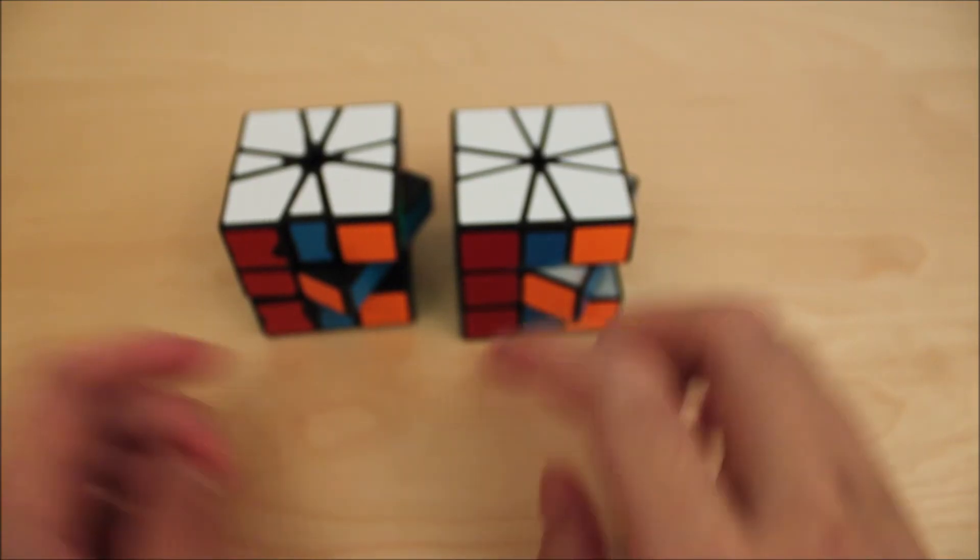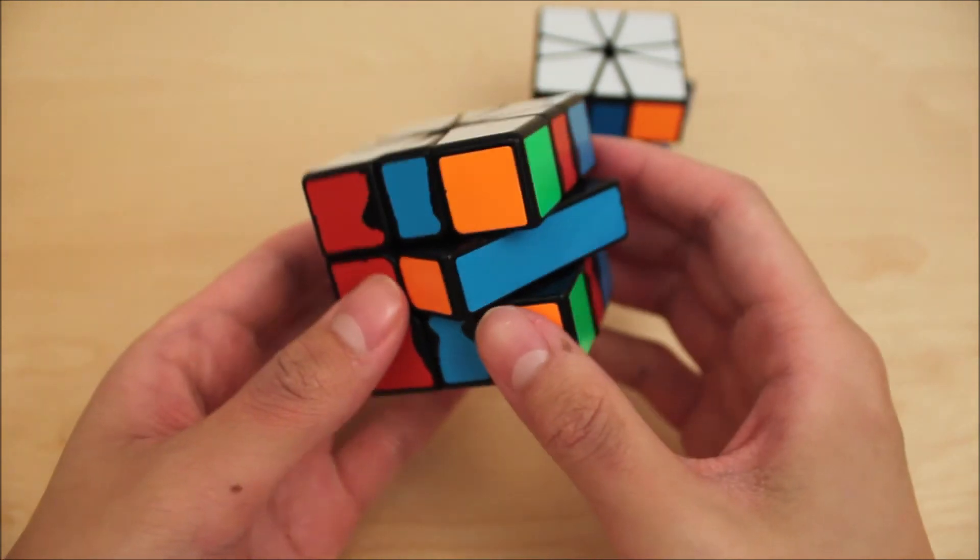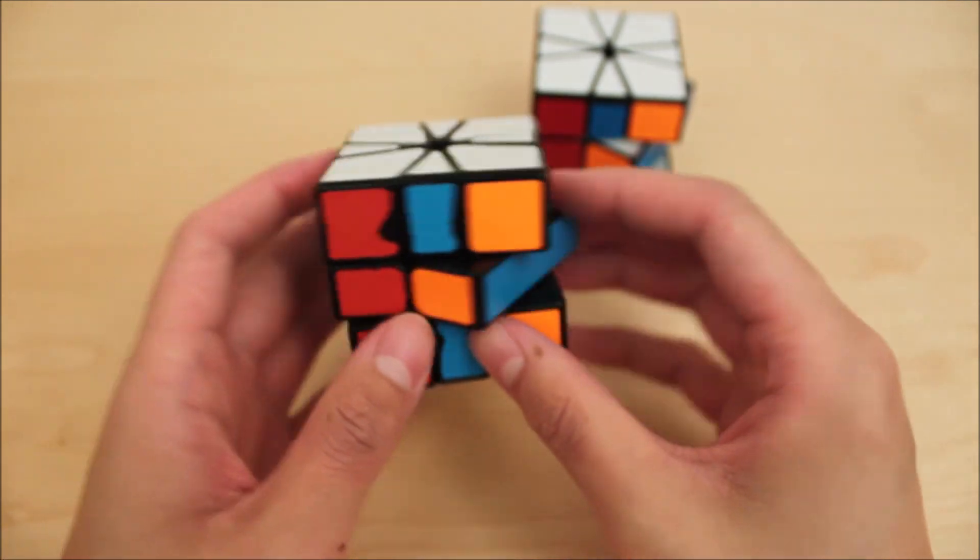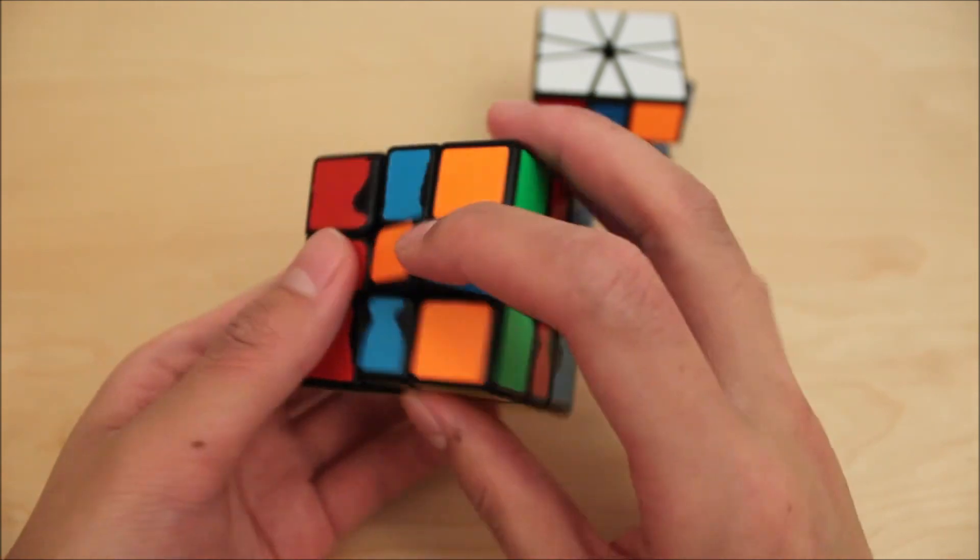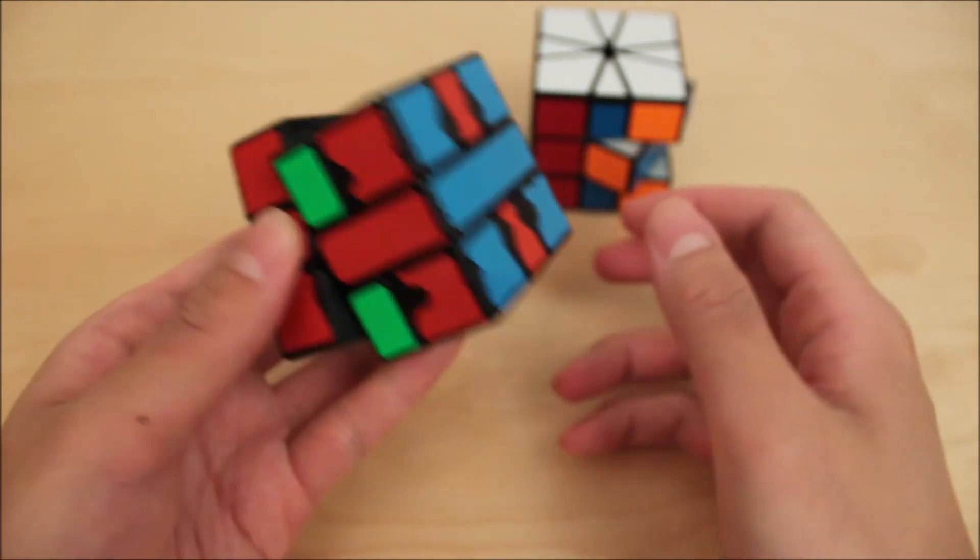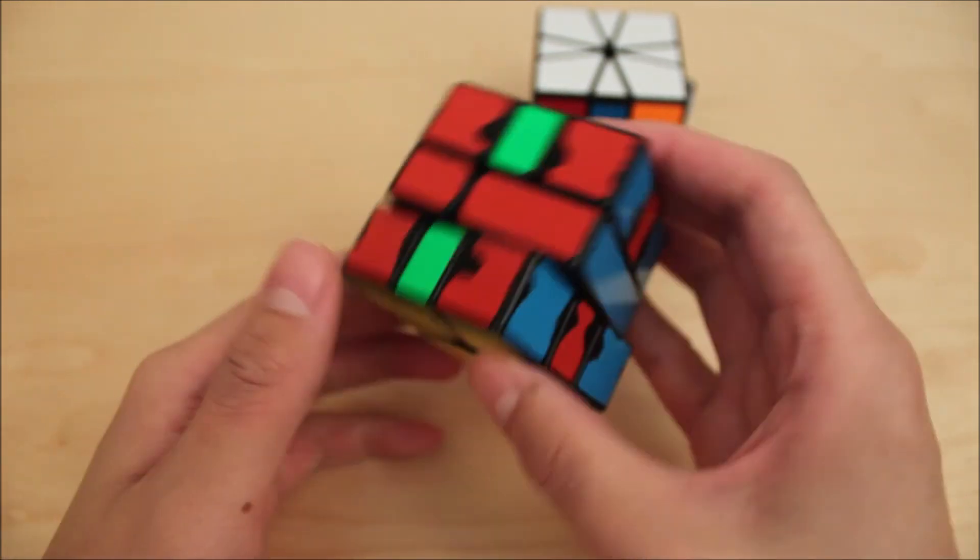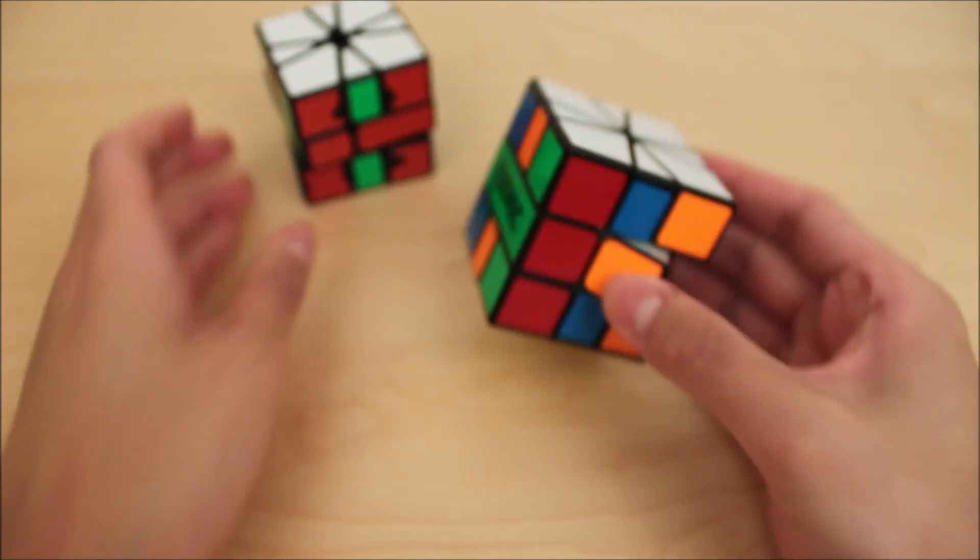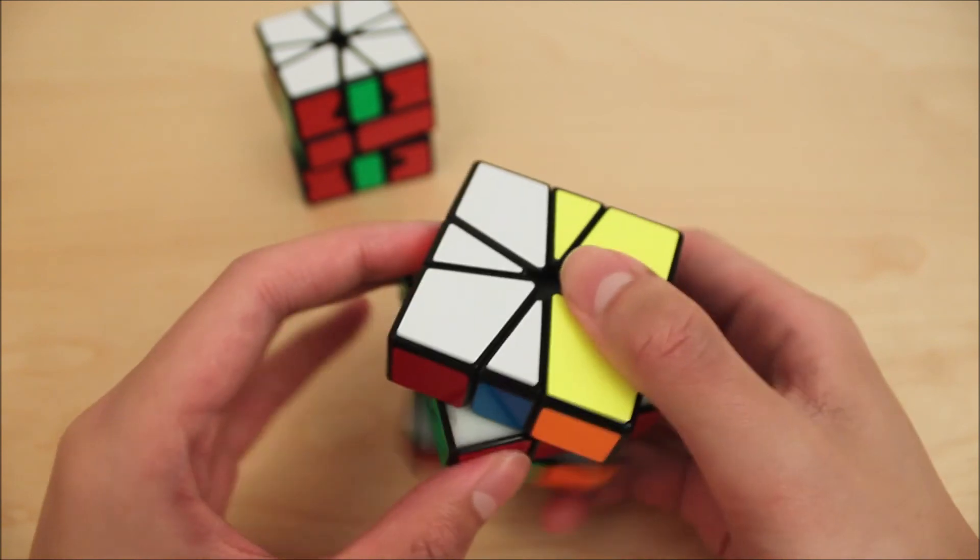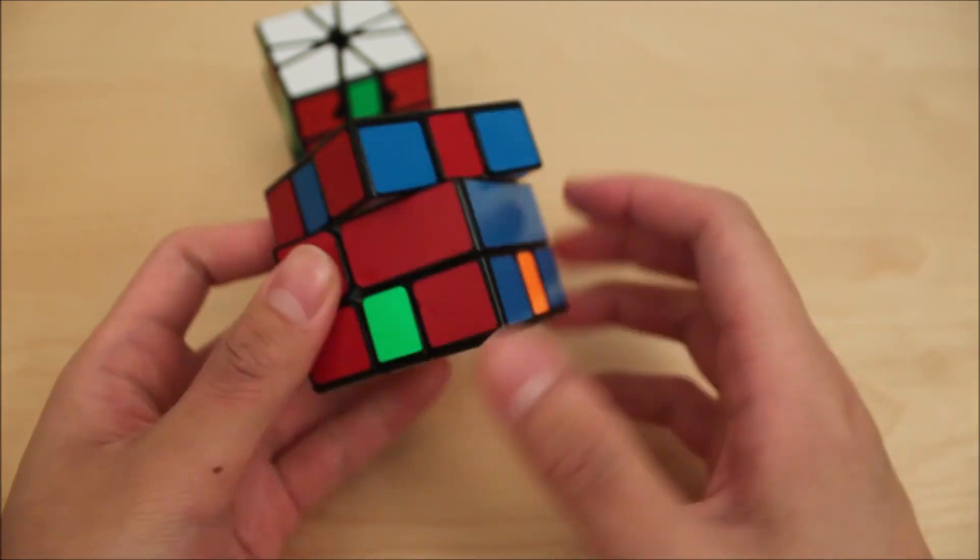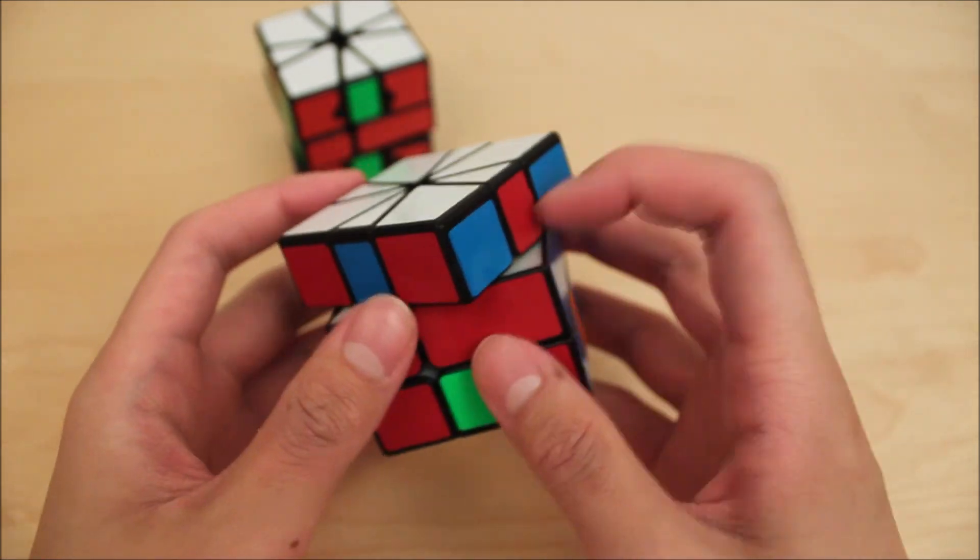So PNPN also gets you out of some ugly cases. So here's a PBL, there's parity on both layers. Of course, if you do an NN, we get a pretty ugly PBL, double open. What we can do here is PNPN. You get a much better case, ZZ.